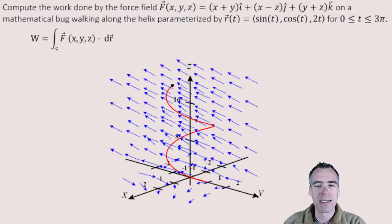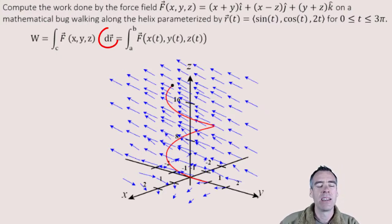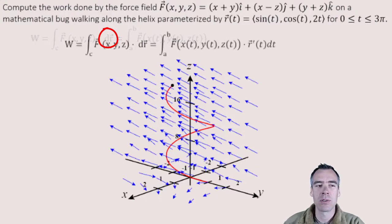And if we parameterize this, we get the integral from A to B because we parameterize it with respect to time. And our force field now is a function of X, Y, and Z, where X, Y, and Z are all functions of time since we parameterize them. And that Dr instead translates to our velocity vector function, R prime of T, DT.